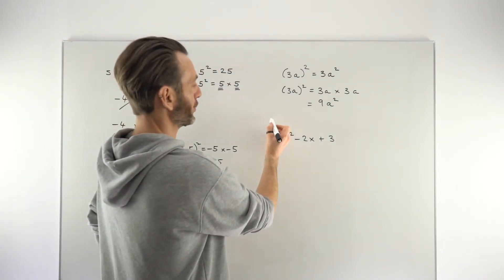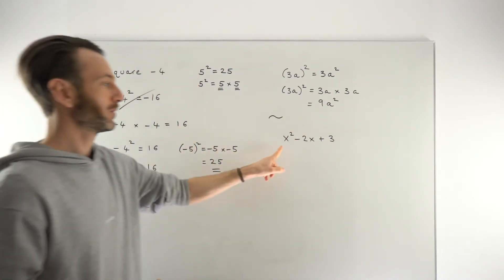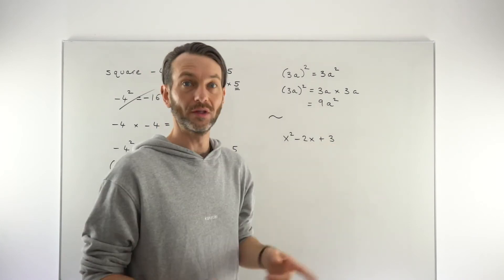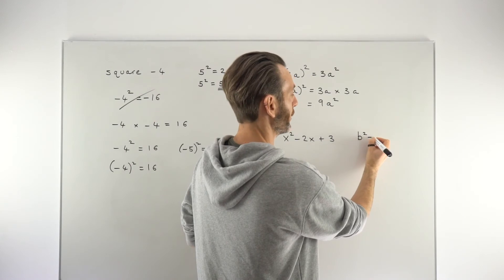Another really common scenario in which you see the issue with a negative being squared is when dealing with quadratic equations and using the discriminant. So if you're not familiar with quadratic equations, don't worry too much about this.